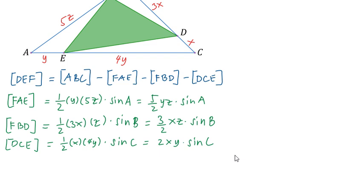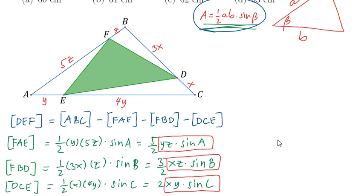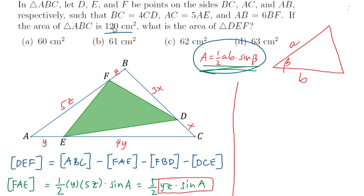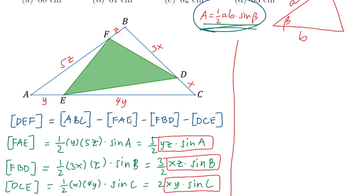Observe that if only we know YZ sine A, XZ sine B, and XY sine C, then we are done. Now, how can we find such values or the values of these factors? I will apply again the same formula but to the biggest triangle ABC. Take note that the area of triangle ABC is 120. Let's start with angle A. Take note there are 3 angles here so we should come up with 3 equations involving YZ, XZ, and XY.